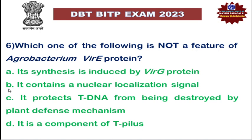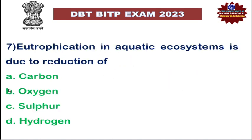Vir-E gene is protecting the T-DNA from being destroyed by the plant defense mechanism — correct. The last option states it is a component of T-pilus — no. Vir-B operon is responsible for forming the T-pilus; it is not a function of Vir-E. So the last option is the correct answer.